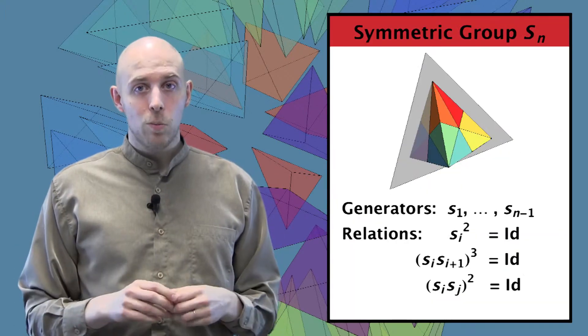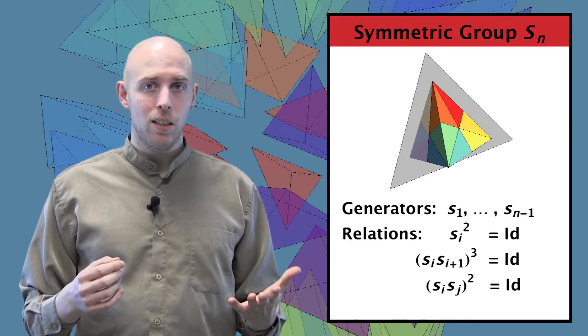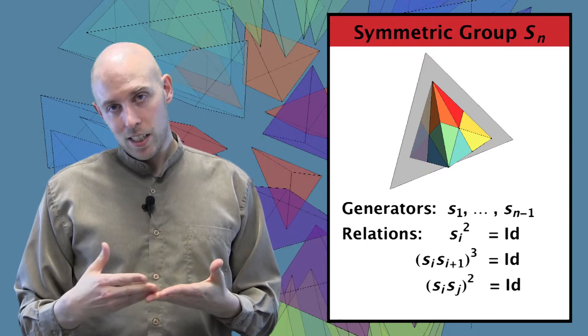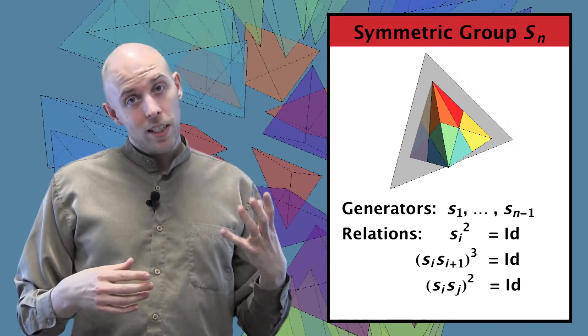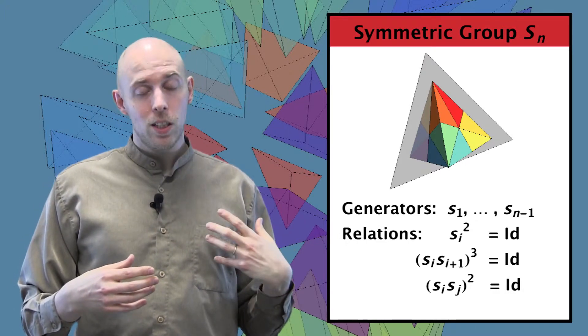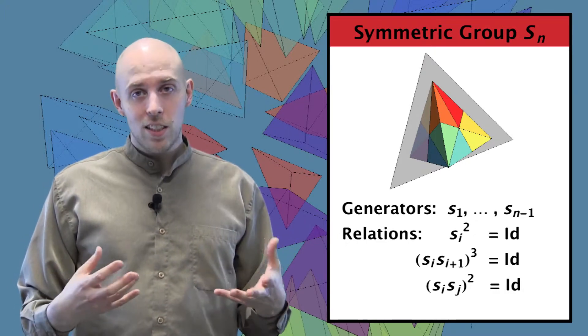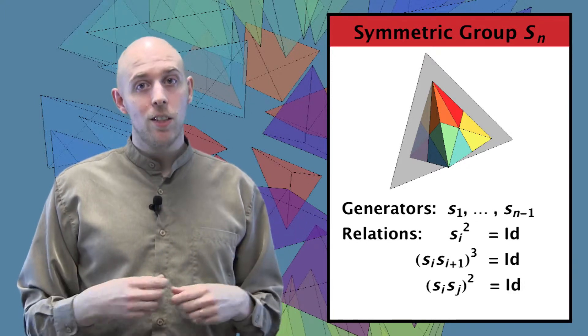As a reflection group, the symmetric group has generators S1 through Sn-1 with relations Si² equals the identity. Consecutive generators satisfy (Si Si+1)³ equals the identity, and non-consecutive generators commute, or in other words, (Si Sj)² equals the identity.